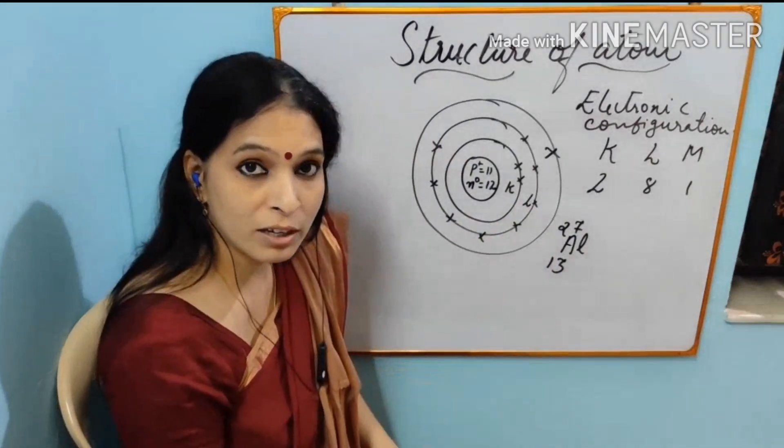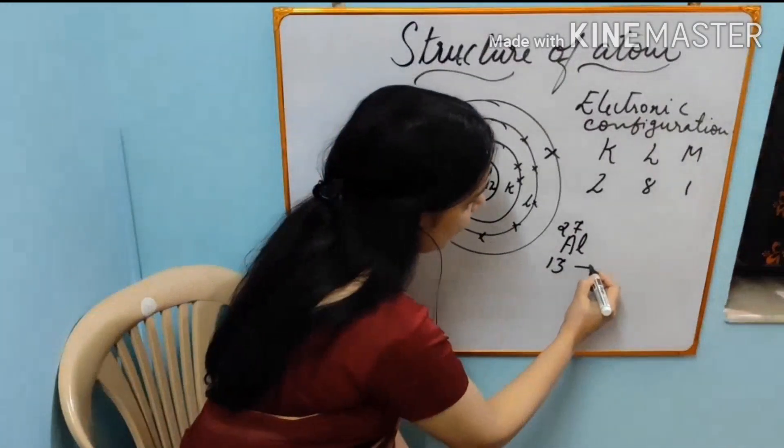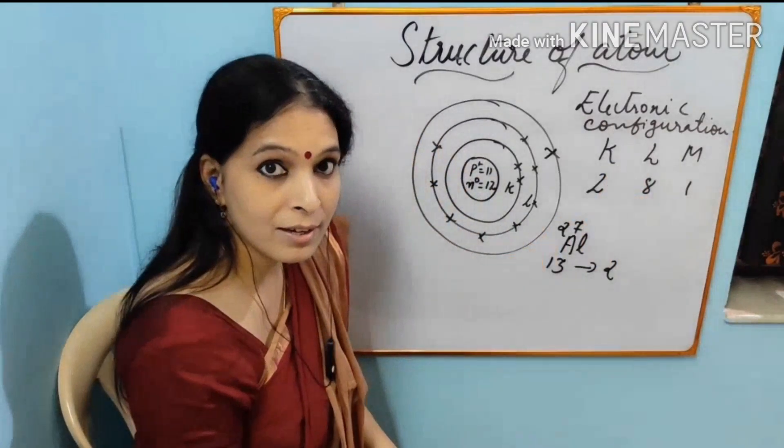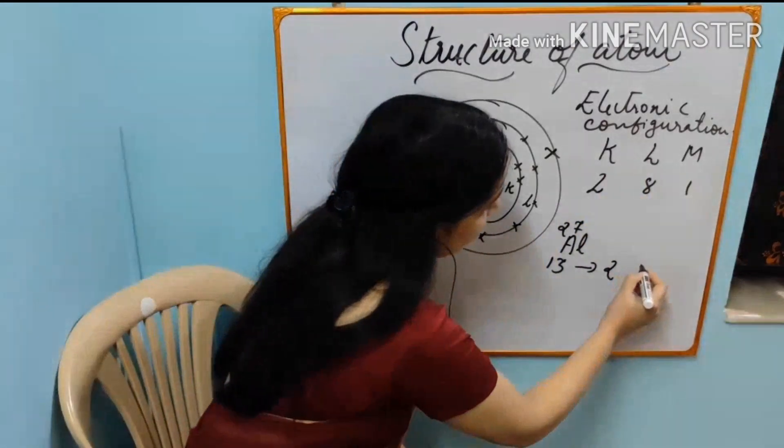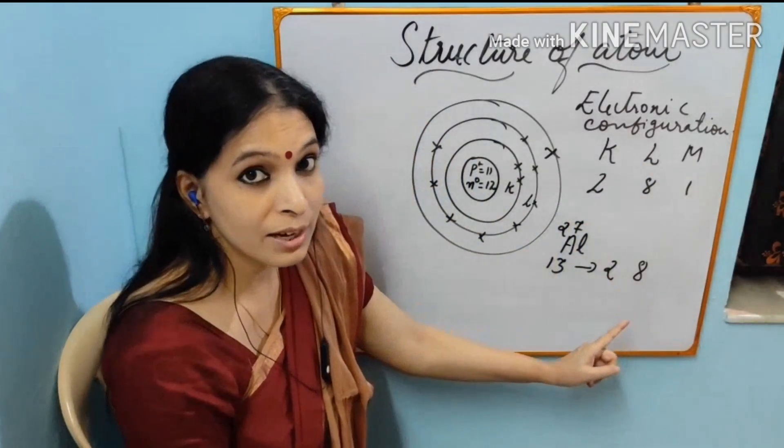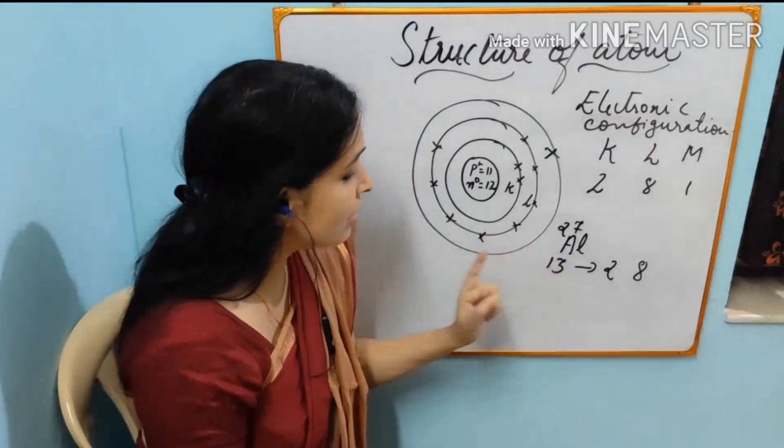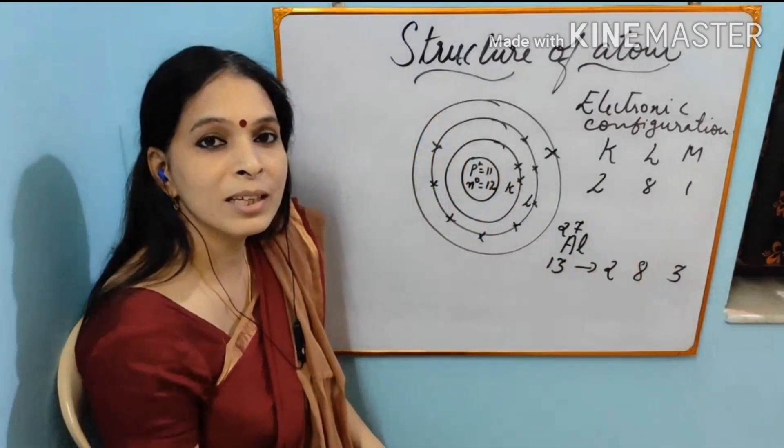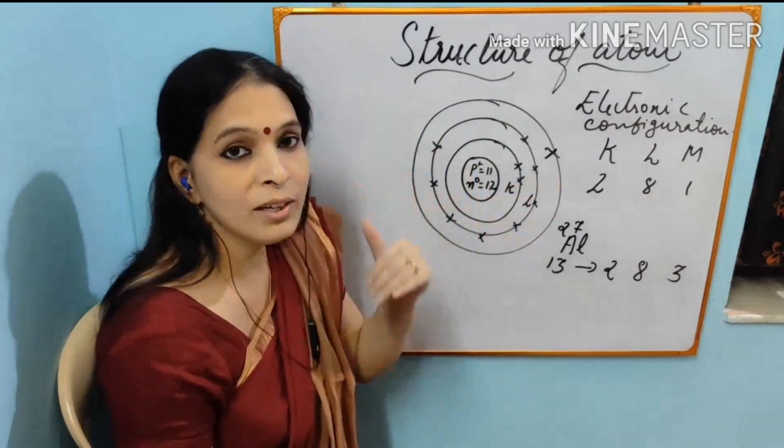So what is its electronic configuration? It will be 2. That is maximum number of electronic location is 2. Then 8. L shell 8. 2 plus 8 is equal to 10. Then rest is 3. That 3 will go to the third shell N. So this is how we are writing the electronic configuration. You can practice with other elements too.